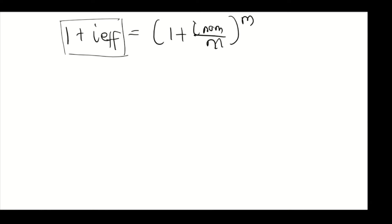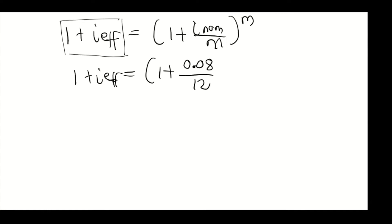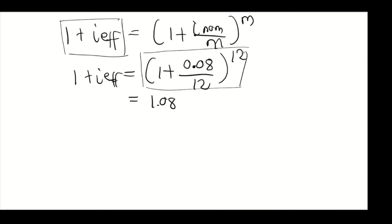We first find the effective rate. We write: 1 + i_eff = (1 + 0.08/12)^12, since the nominal interest rate was given as 8% compounded monthly. Evaluating this gives approximately 1.082995.